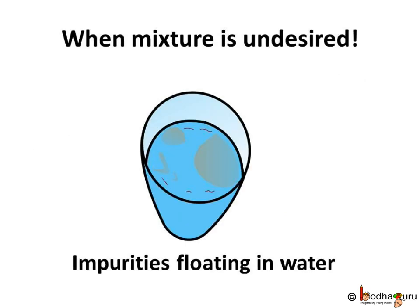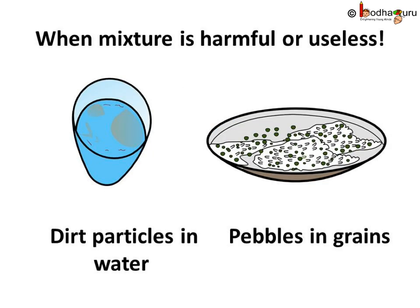We wouldn't try to separate sugar from a drink like lemon squash. But will you ignore if the water you drink has impurities? Obviously we need to remove the impurities before it is usable. So a mixture is not always desirable. Also, when a mixture is either harmful or useless, we need to take out what we need or throw out what we don't need within that mixture.